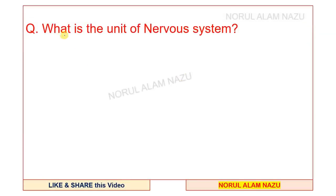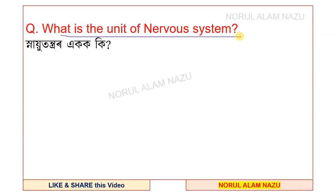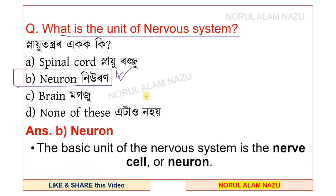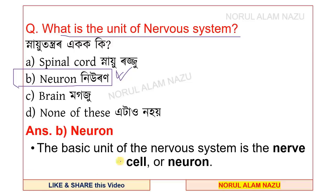Question number 11. What is the unit of nervous system? Option B is correct — the neuron. The neuron is the basic unit of the nervous system, also known as the nerve cell.